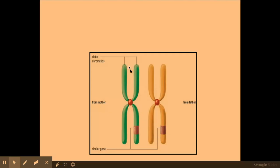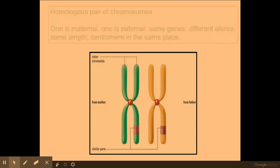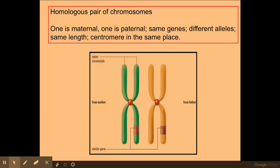It's important to know that these contain sister chromatids, so duplicated DNA as well. The definition of homologous pairs of chromosomes — taken directly from the mark scheme — is: one maternal and one paternal chromosome, with the same genes but different alleles, the centromere in the same place, and the same length.